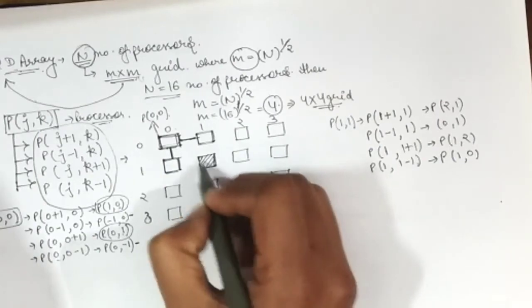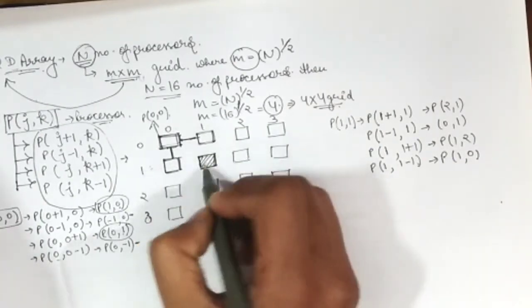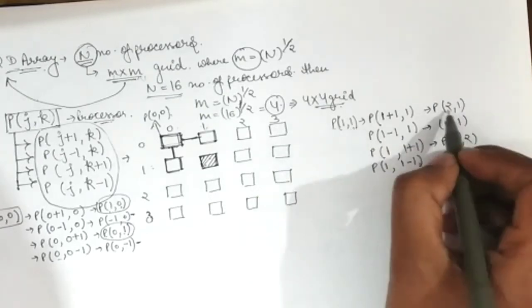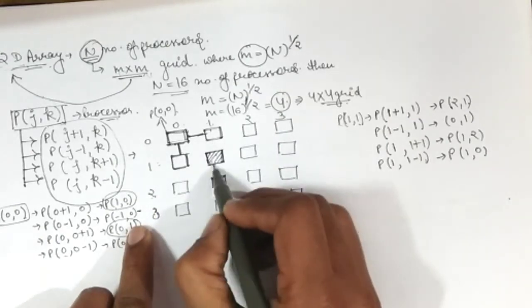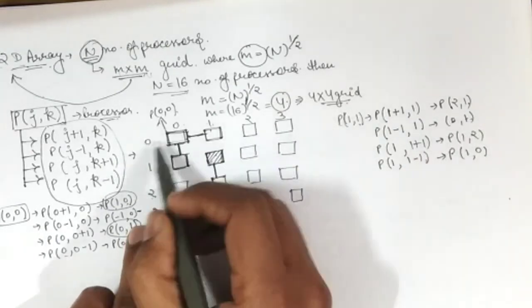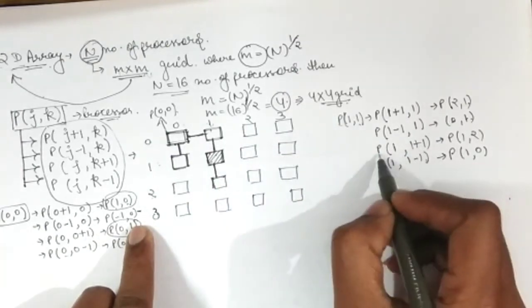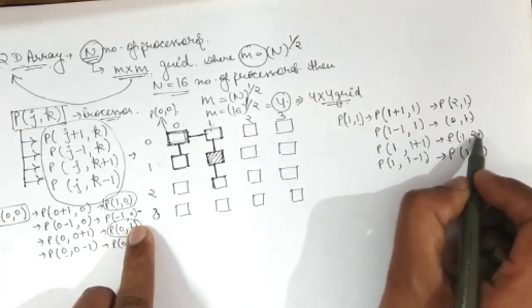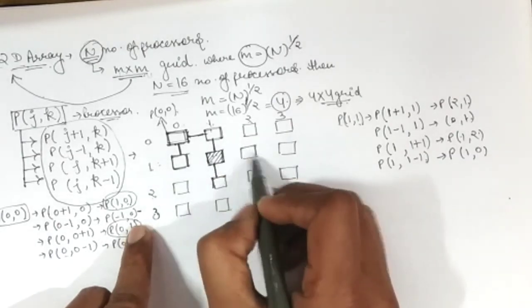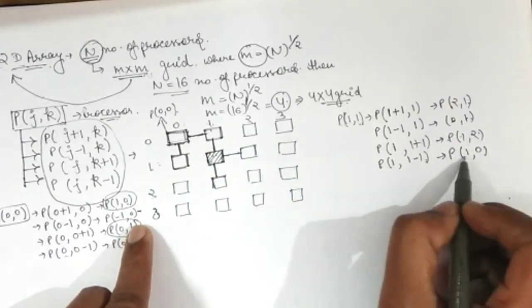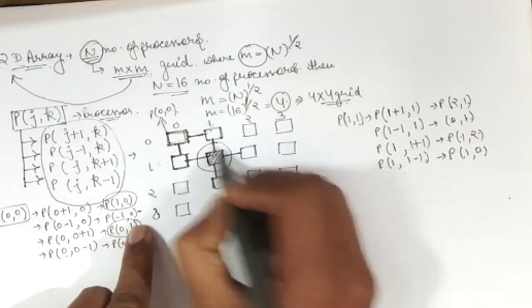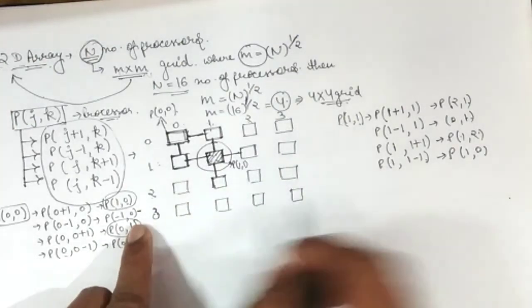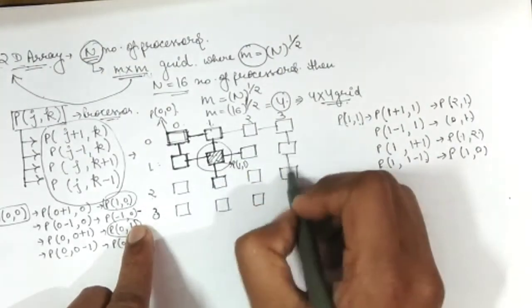Looking at processor p(1,1) in the diagram: p(1,1) is connected to p(2,1), p(0,1), p(1,2), and p(1,0). p(1,2) connects upward, and p(1,0) connects downward. These are the four links by which the p(1,1) processor is connected. Following the same process, all processors in the grid are connected to each other through their respective neighbors.